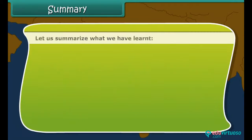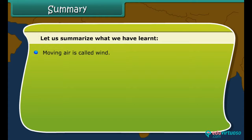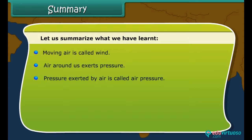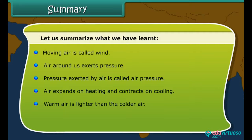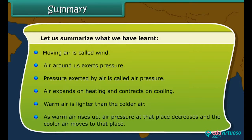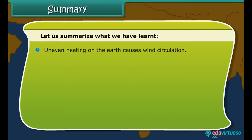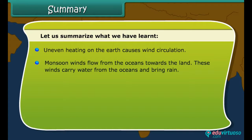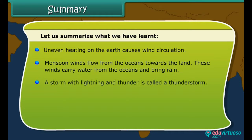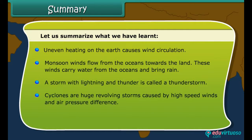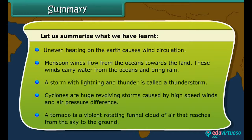Summary: Moving air is called wind. Air around us exerts pressure, called air pressure. Air expands on heating and contracts on cooling. Warm air is lighter than cold air — warm air rises up, air pressure decreases at that place, and cooler air moves in. Uneven heating on the earth causes wind circulation. Monsoon winds flow from the oceans towards the land and bring rain. A storm with lightning and thunder is called a thunderstorm. Cyclones are huge revolving storms caused by high-speed winds and air pressure difference. A tornado is a violent rotating funnel cloud of air that reaches from the sky to the ground.